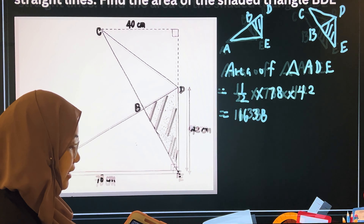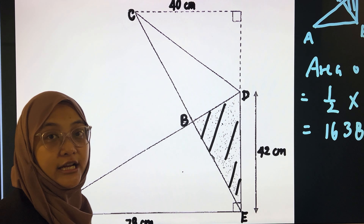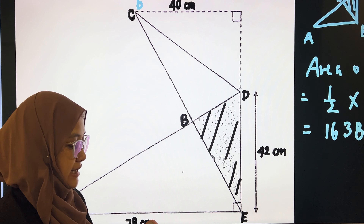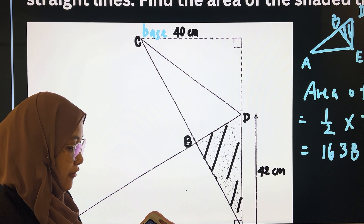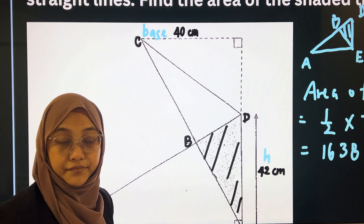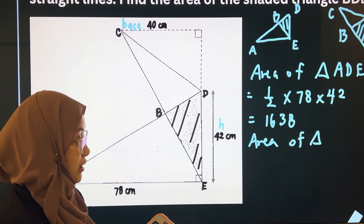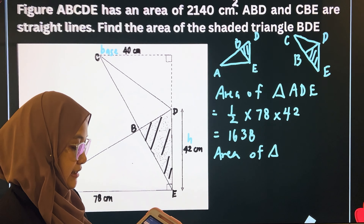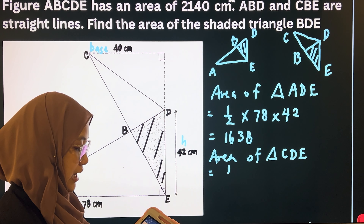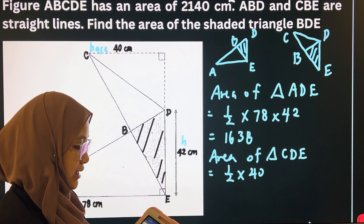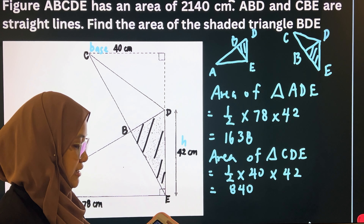Now let us find out the area of triangle CDE. Triangle CDE has a base of 40 cm and a height of 42 cm. Area of triangle CDE is equals to half multiplied by 40 multiplied by 42. That gives us 840 square cm.